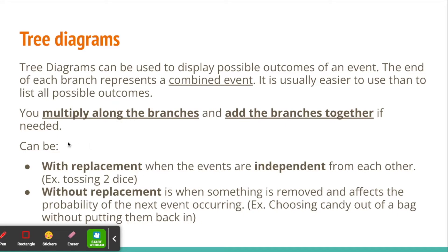There are two types of events well explained with tree diagrams. One is with replacement: you select something from a box and put it back before selecting a second time. The other is without replacement — you pick a candy, eat it, then pick a second one, so the first selection affects what outcomes remain in the box.